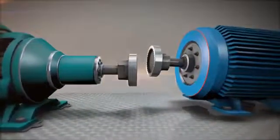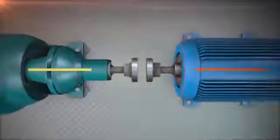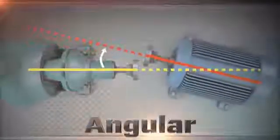Vertical and horizontal. Both vertical and horizontal directions each have a combination of offset and angular misalignment.